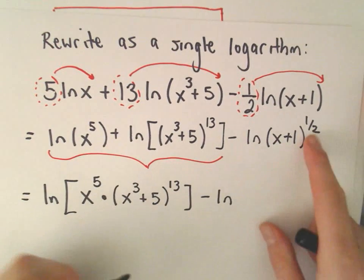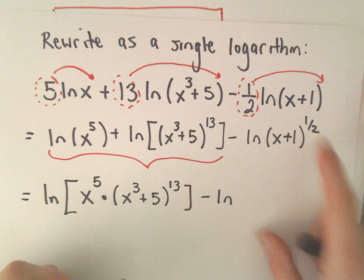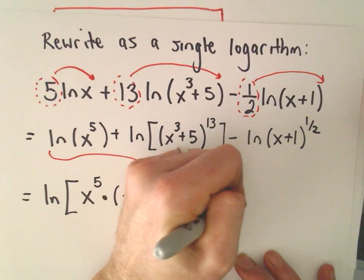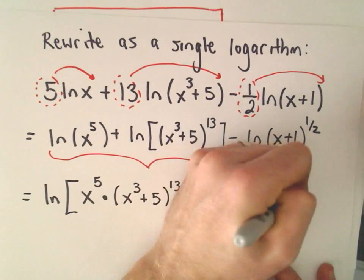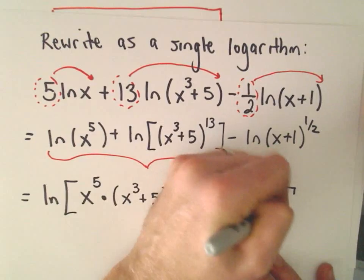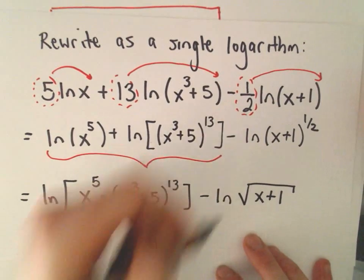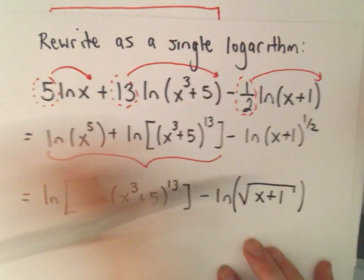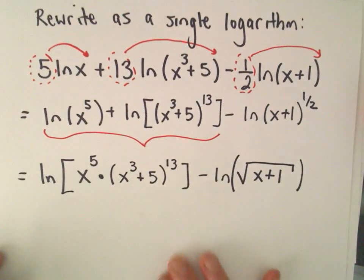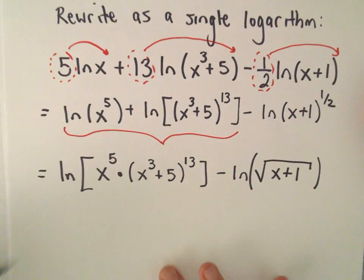And again, you don't have to do this, but I'm going to. Remember, if something has an exponent of 1 half, that's really the same thing as a square root. So I'll write that as the natural logarithm of the square root of x plus 1. Don't need the parentheses, but I'm just going to stick them in there. It definitely doesn't make it incorrect.